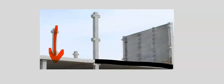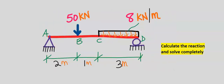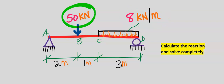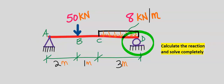Considering that the wall covers only one part of the beam, the uniformly distributed load from the wall is 8 kilonewtons per meter, while the point load from the column is 50 kilonewtons. The beam is pinned supported at point A and roller supported at point D. The uniformly distributed load from the wall starts from C and ends at D.